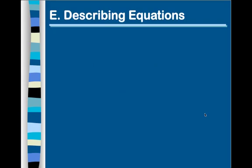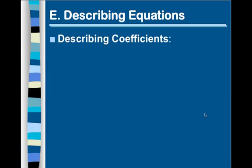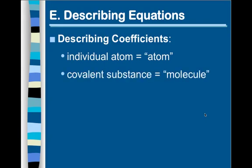Describing equations. Just a real quick overview. You've probably seen me use some of this terminology. Describing coefficients. There are really three ways we describe coefficients. We refer to an individual atom as an atom. That's if something is just by itself. For example, aluminum, in the last example, on the reactants, and copper on the right, or in the products, that was an atom. So, a covalent substance, we refer to as a molecule. Well, what's a covalent substance? A covalent substance shares electrons. Well, what shares electrons? Two nonmetals. Well, where are the nonmetals found? They're found on the right, upper side of the periodic table. Upper right side of the periodic table.